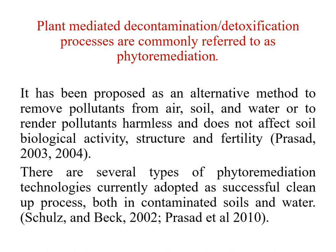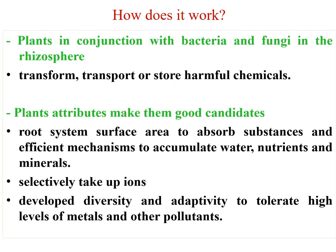Phytoremediation has been proposed as an alternative method to remove pollutants from air, soil, and water, or to render pollutants harmless, without affecting soil biological activity, structure, and fertility. It works in conjunction with bacteria and fungi in the rhizospheric zone of the plant — transforming contaminants, transporting or storing harmful chemicals in the plant body. The plant root system and its surface area are helpful in absorption of substances, with efficient mechanisms to accumulate water, nutrients, and minerals. Plant roots selectively take up ions and develop diversity and adaptability to tolerate high levels of metals and other pollutants.